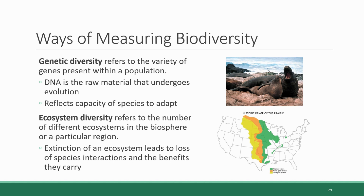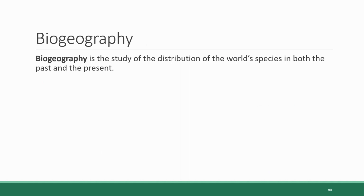A little later in this section, we will talk about some other benefits that humans derive from biodiversity. But first, we need to talk about some trends and patterns in biodiversity across the globe. One of the fields of study that provides us with knowledge about trends in biodiversity is biogeography. Biogeography is the study of the distribution of the world's species in both the past and the present.